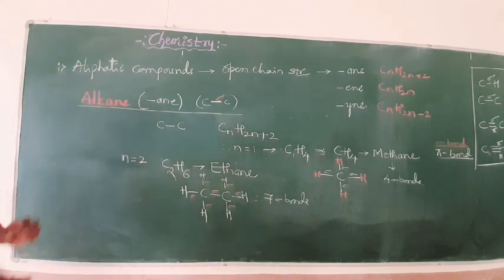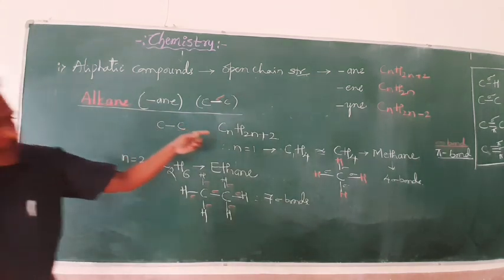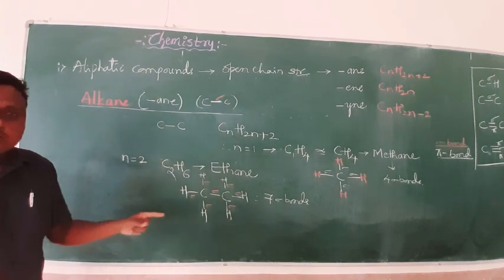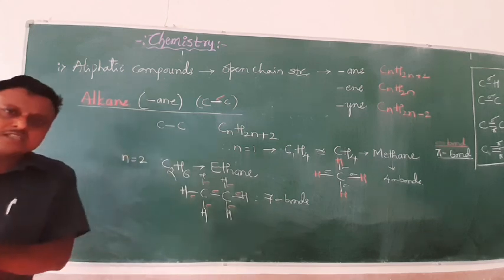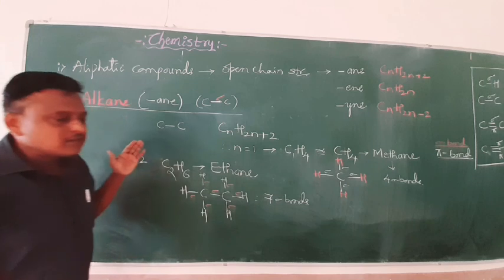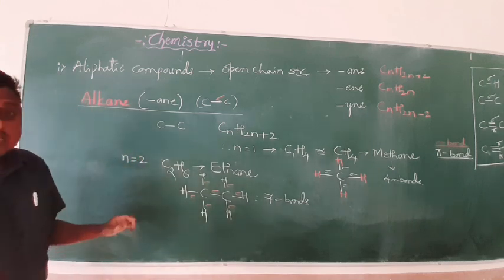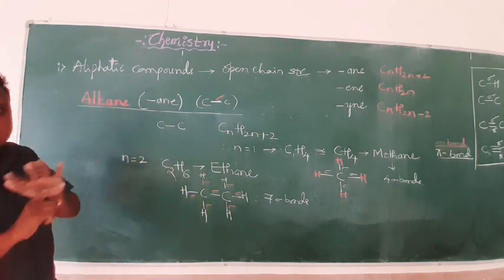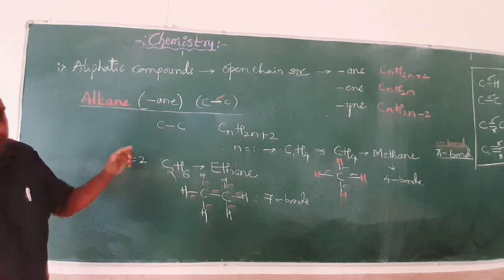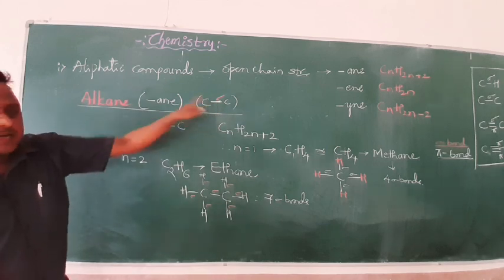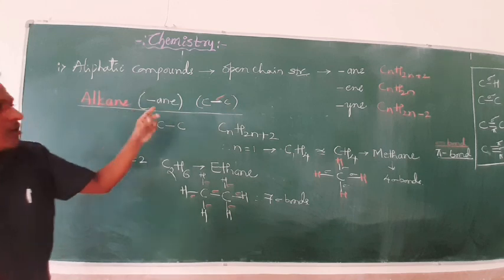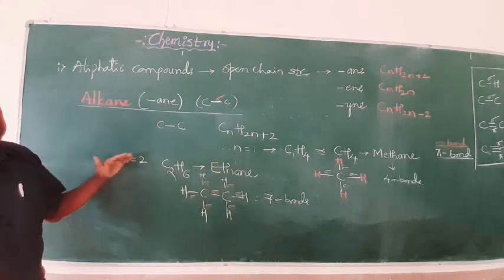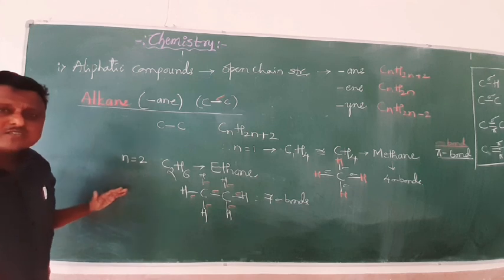One carbon is called meth-, two carbons is eth-, three is prop-, four is but-, five is pent-, and so on up to oct-, non-, dec- for 8, 9, 10 carbons. Alkanes involve only sigma bonds because they have only single bonds. Alkanes are the organic compounds which involve carbon-carbon single bonds.